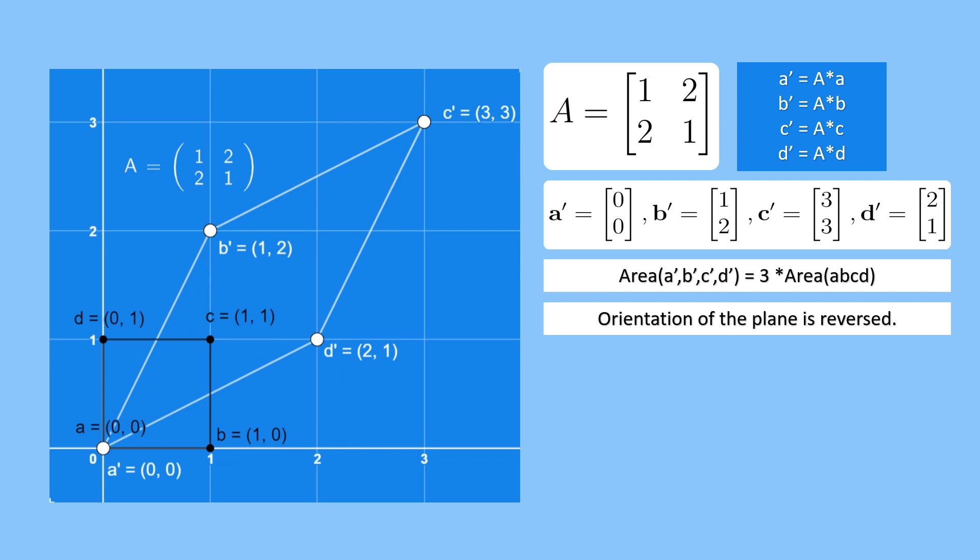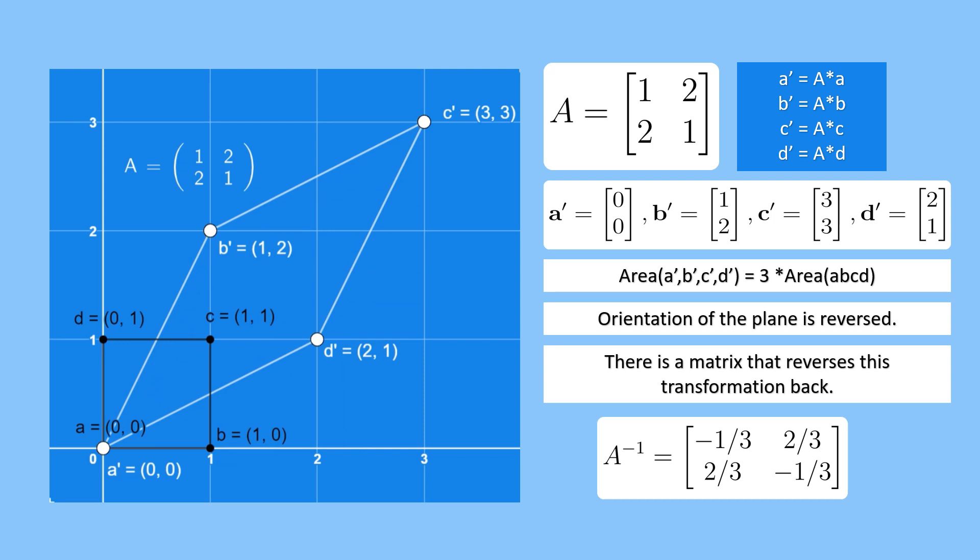Another critical observation is that there exists a matrix that can reverse this transformation. Specifically, the inverse of matrix A, which is calculated as -1/3, 2/3, 2/3, and -1/3, can bring the parallelogram back to its original square.